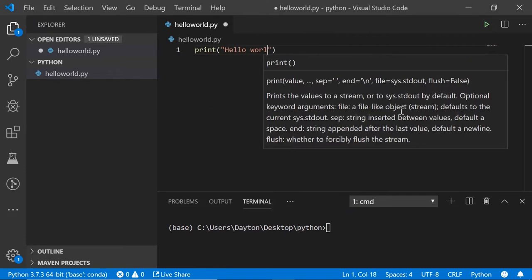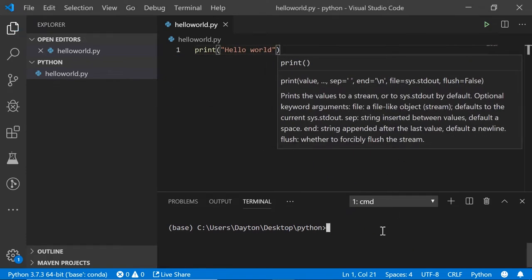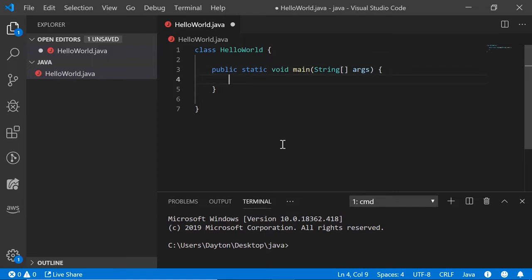Hello World is a program that outputs the message Hello World. Because it's such a simple program, it's a great first program to write when learning a new programming language.